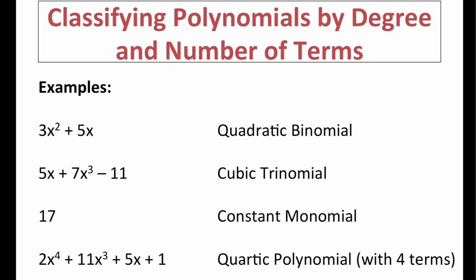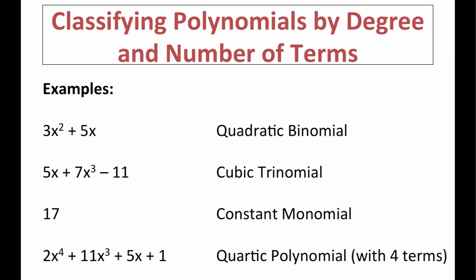The next example is another trick — sometimes the simplest examples are the hardest for students. We have just a number with no variable and only one term. When there's no variable, that's a constant. When there's only one term, that's a monomial. So we have a constant monomial.